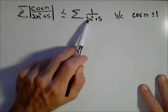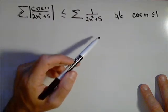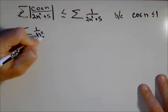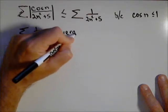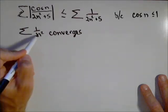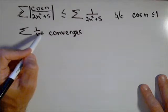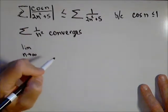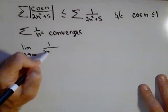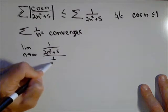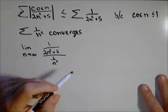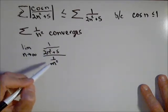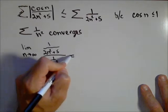So we have to decide if one over two n squared plus five converges or diverges. There are several different tests we can use — I'm a big fan of the limit comparison test. I know that the series one over n squared converges; it's a p-series of the form one over n to the p where p is greater than one. So this is a convergent series. With the limit comparison test, I'm going to take the limit as n goes to infinity of one over two n squared plus five, divided by one over n squared.